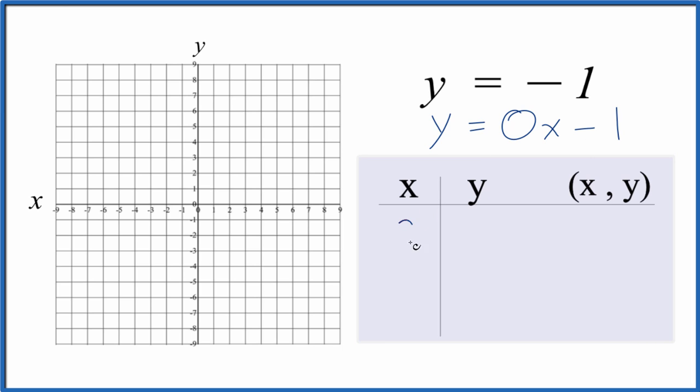Because if we put 0 in for x, 0 times 0, that's 0, y is just negative 1. If I put 3 in for x, 0 times 3, that's 0, y is still negative 1.